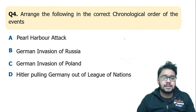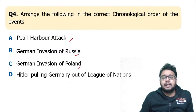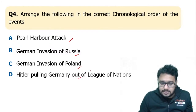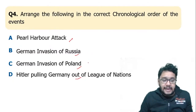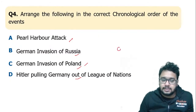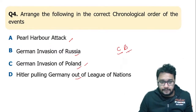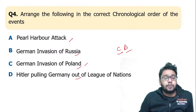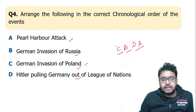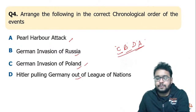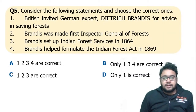Arrange the following in correct chronological order: Pearl Harbor attack, German invasion of Russia, German invasion of Poland, and Hitler pulling Germany out of the League of Nations. From the Nazism and Rise of Hitler chapter, the correct chronological sequence is: German invasion of Poland first, then German invasion of Russia, then Hitler pulling out of the League of Nations, and finally the Pearl Harbor attack. So C, D, A order — the answer is C-D-A.